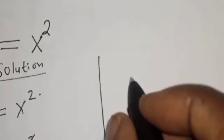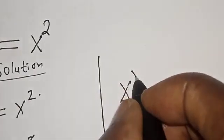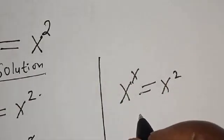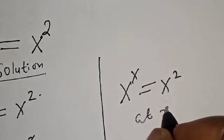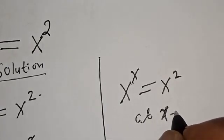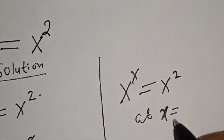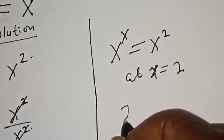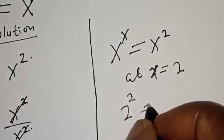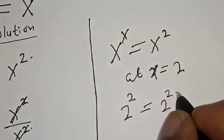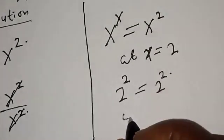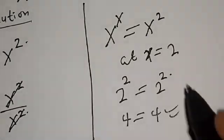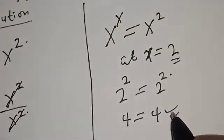We have the given equation: s raised to power s is equal to s squared. At s equals two, we have two raised to power two, is equal to two squared. Two squared is four, equal to four — we satisfy the given equation at s equals two.